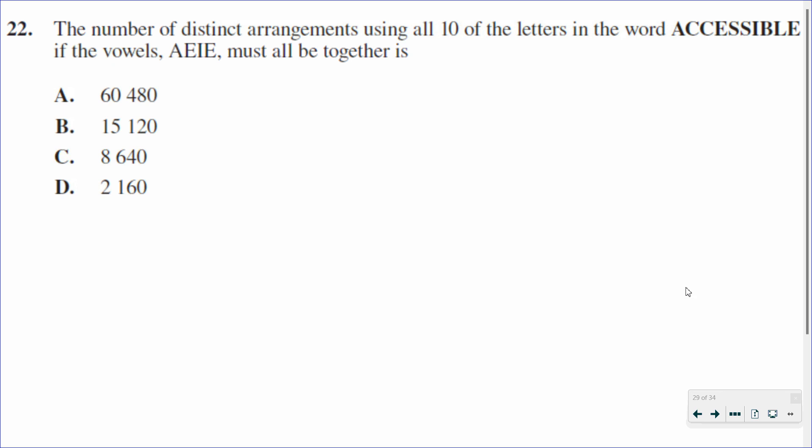Okay, in this question here, we want to know the number of distinct arrangements using all 10 letters in the word accessible if the vowels A, E, I, E must all be together, but it doesn't specify necessarily in that order. So what I want to check first